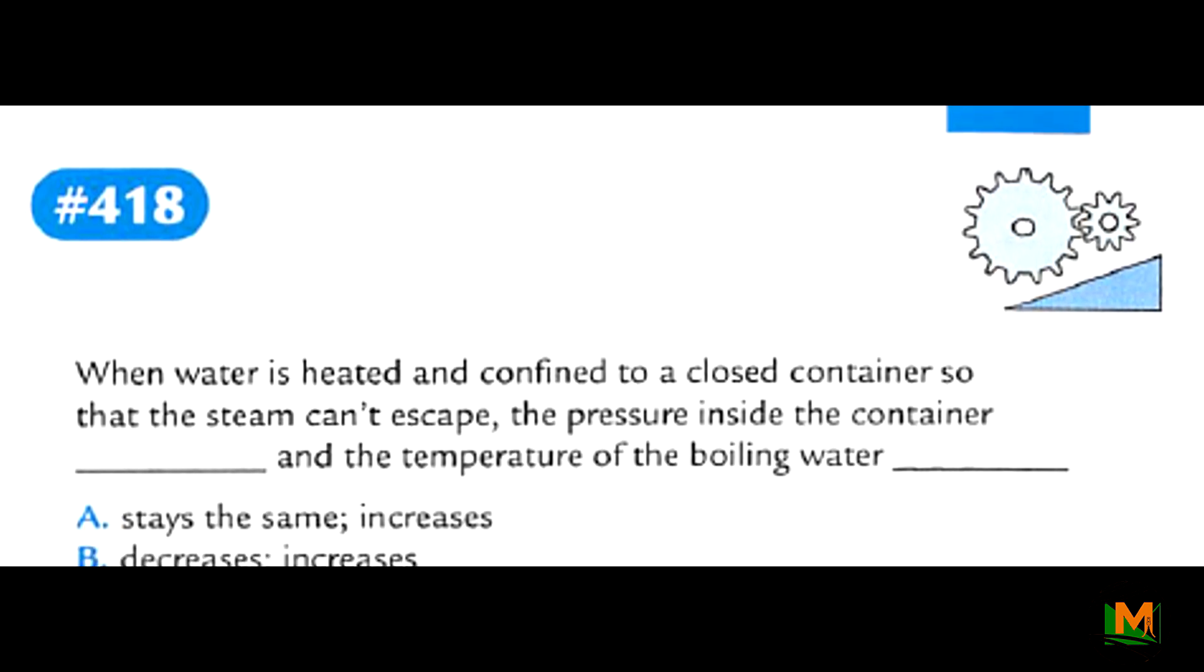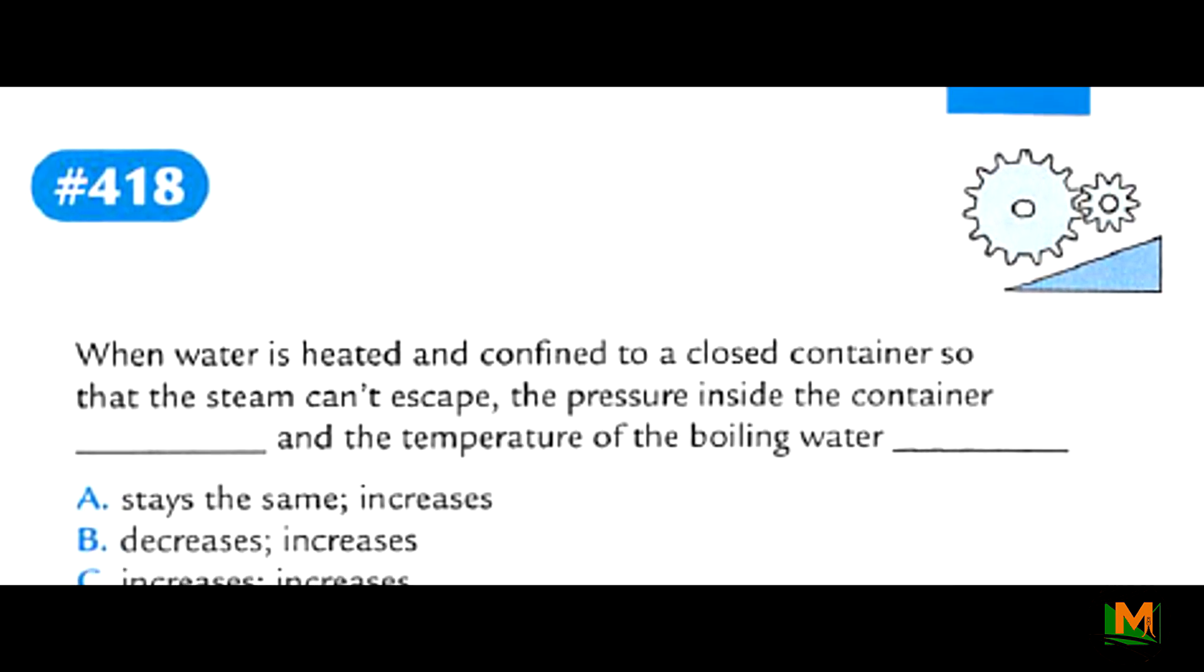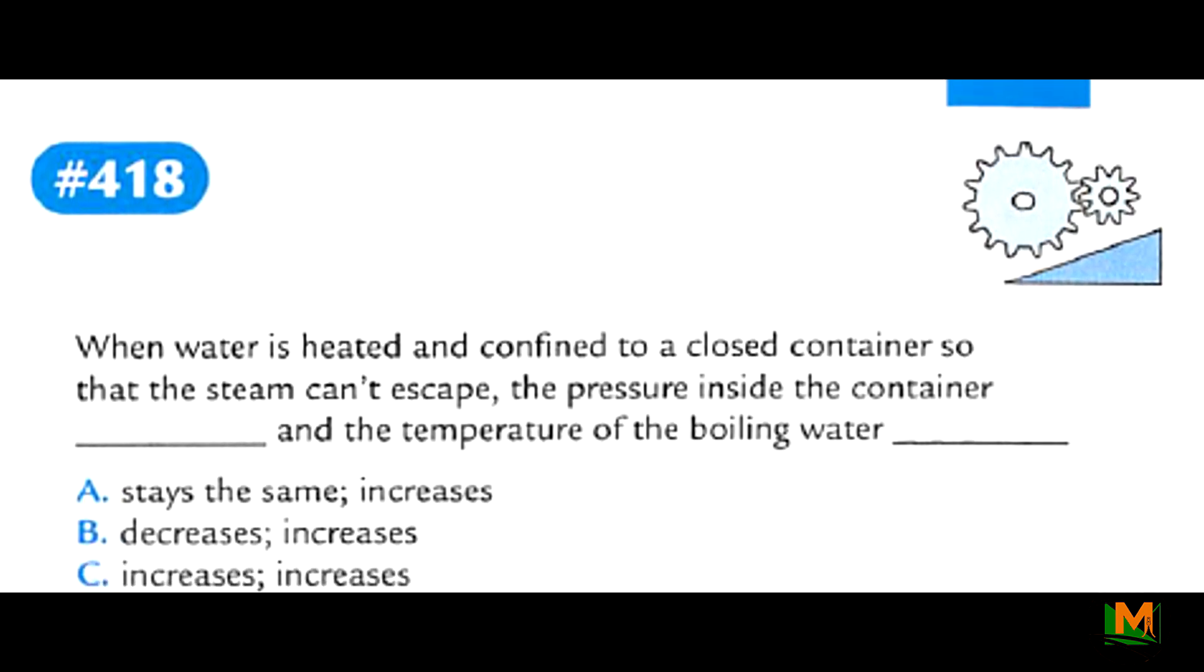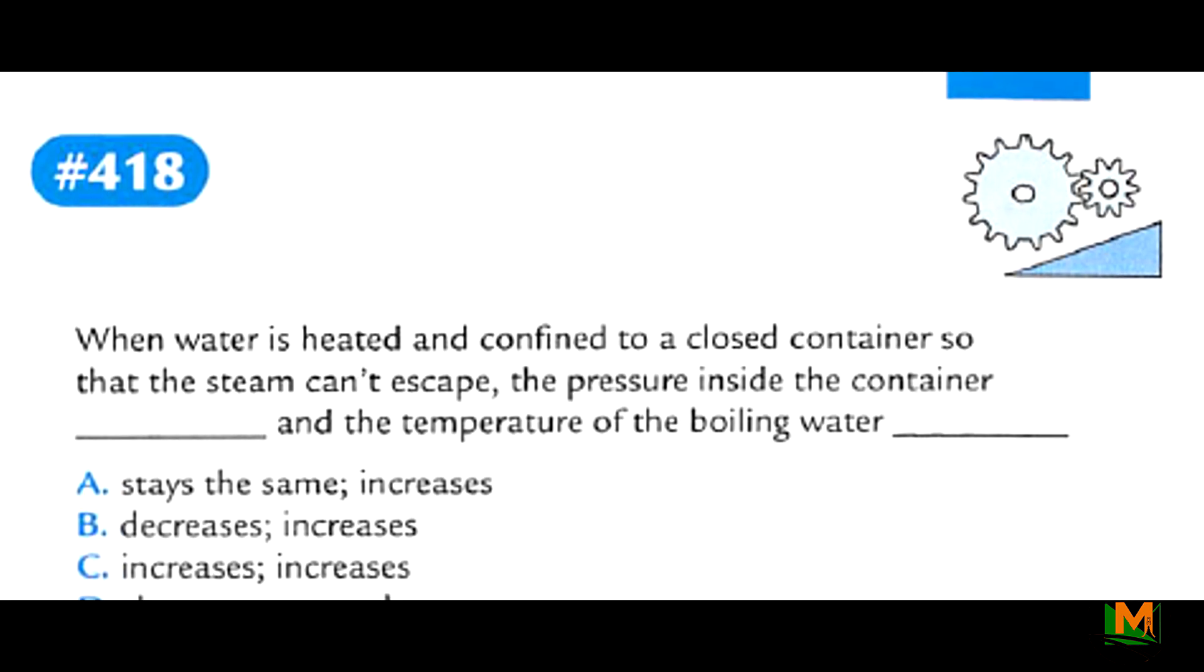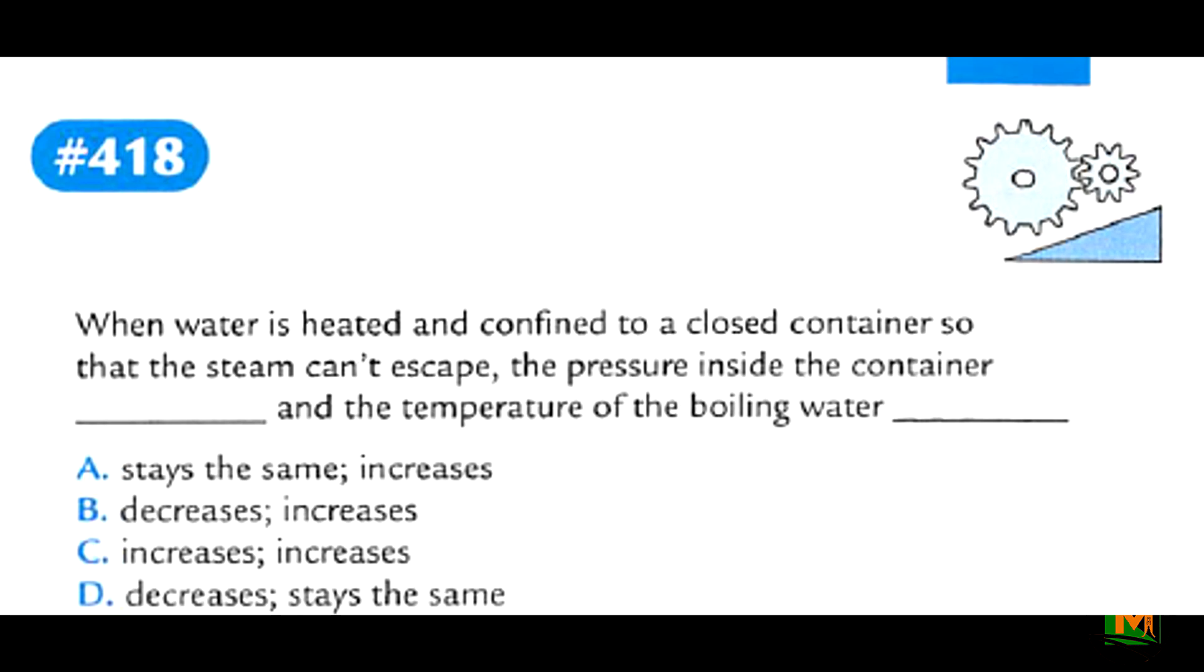Option B, the pressure on the inside of the container will decrease and the temperature of the boiling water will increase. Option C, they both will increase. And Option D, the pressure on the inside of the container will decrease and the temperature of the boiling water will stay the same.